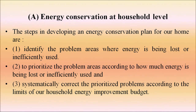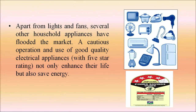We will discuss energy conservation at the household level. Steps in developing an energy conservation plan for the home: identify problem areas where energy is being lost or used inefficiently; prioritize those areas according to how much energy is being wasted; and systematically correct prioritized problems within the limits of your household energy improvement budget. Apart from lights and fans, several other household appliances have flooded the market. Using good quality electrical appliances with a 5-star rating not only enhances their life but also saves energy.